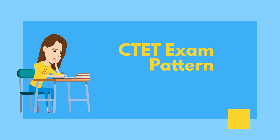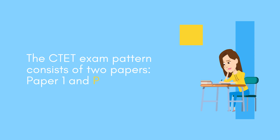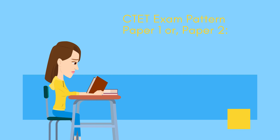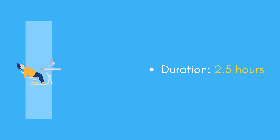The CTET Exam Pattern: The CTET exam pattern consists of two papers — Paper 1 and Paper 2. Paper 1 is for those who want to become teachers for classes I to V, while Paper 2 is for those who want to become teachers for classes VI to VIII.